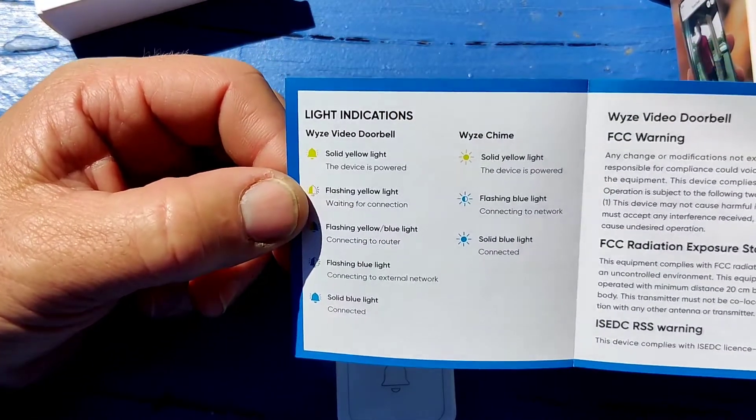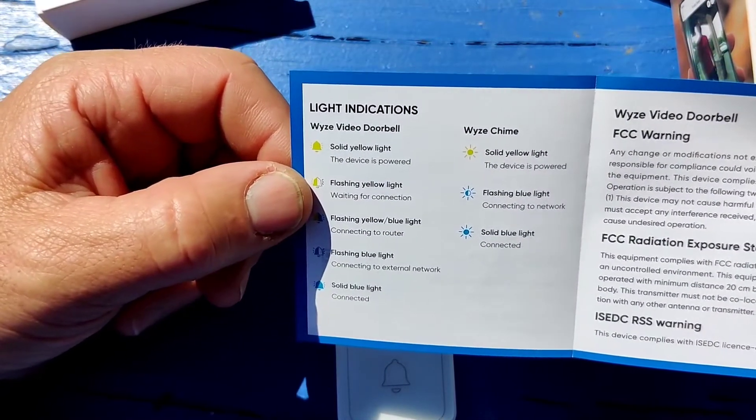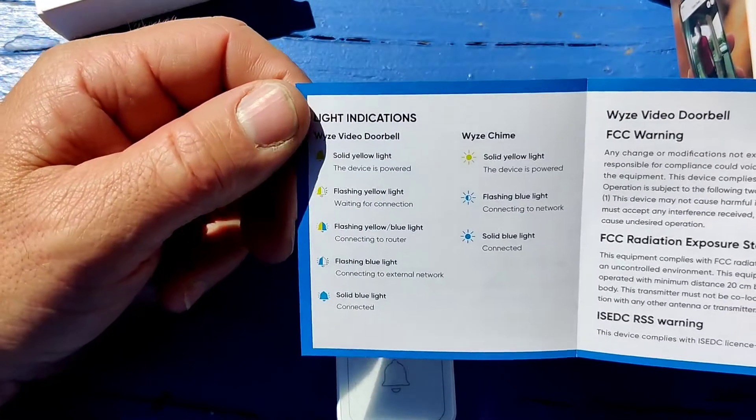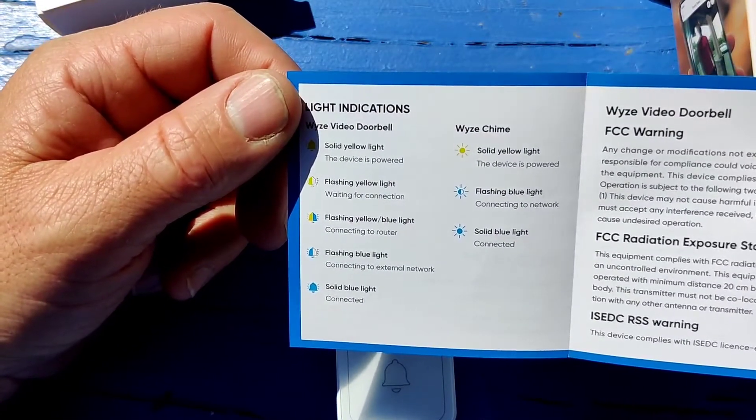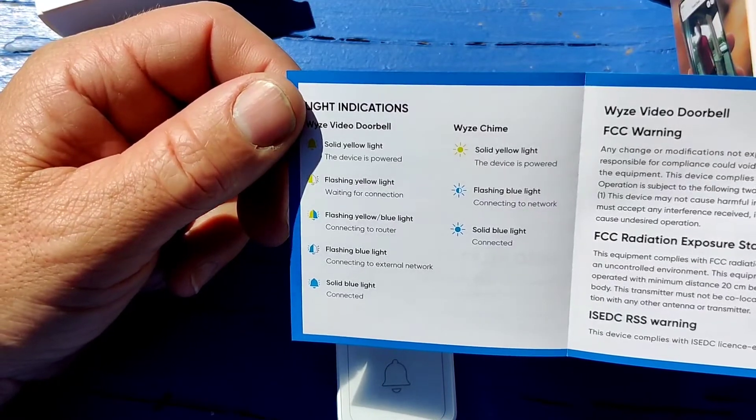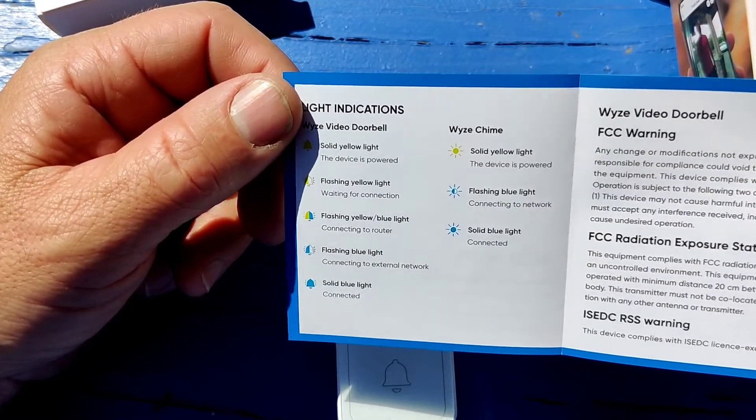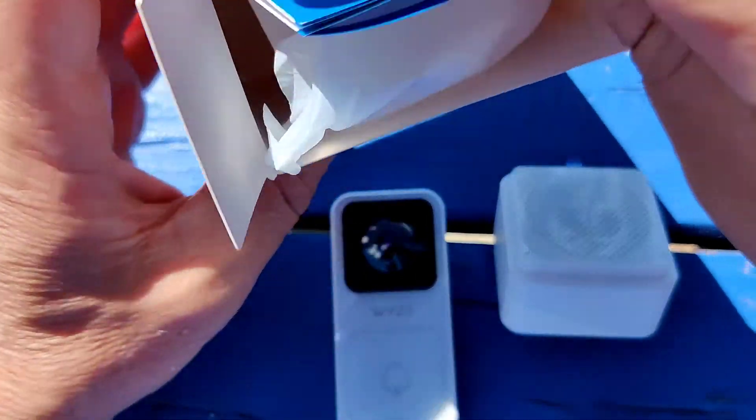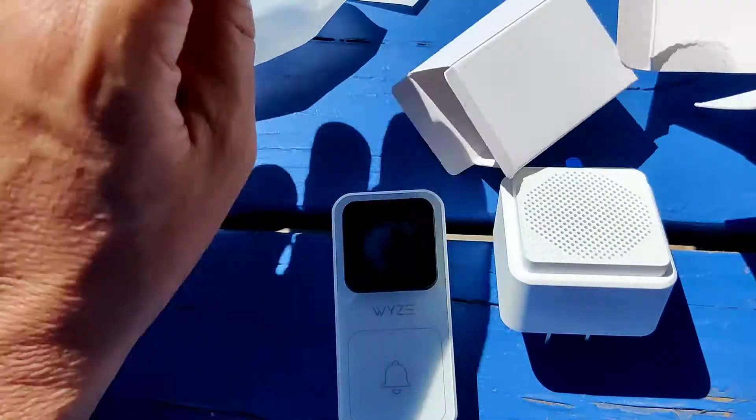Shows you here, video doorbell solid yellow light device is powered, flashing light waiting for connection, flashing yellow and blue light connecting to router, flashing blue light connecting to external network connected, and so on.